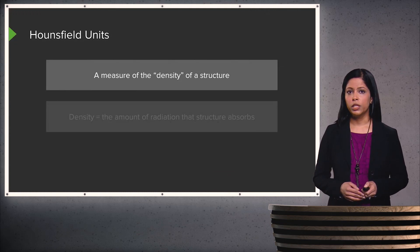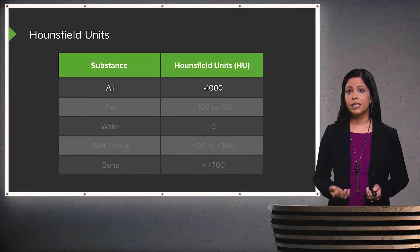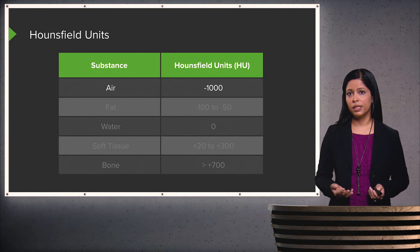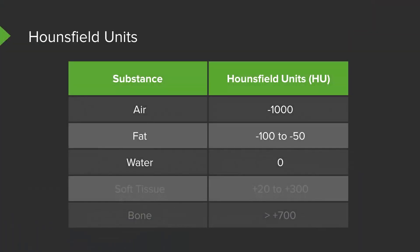A Hounsfield unit is a measure of the density of a structure, and density is the amount of radiation that structure absorbs. Air has the lowest Hounsfield units, at about negative 1,000. It then progresses to fat, which measures about negative 50 to negative 100; water, which is about zero; soft tissue, ranging from about 20 to 300; and bone, which is the highest at greater than about 700.